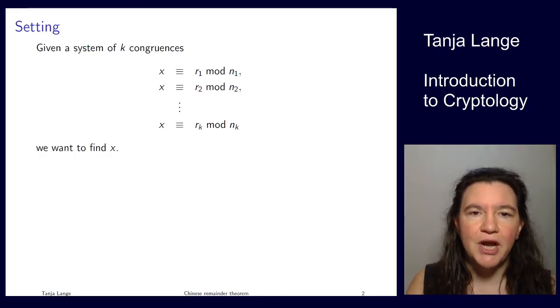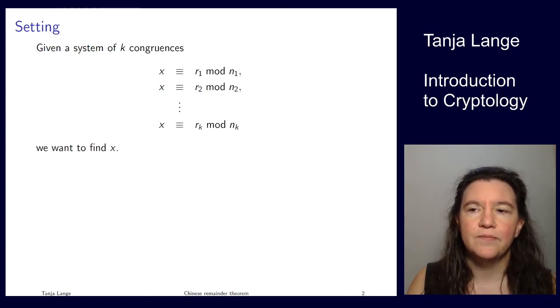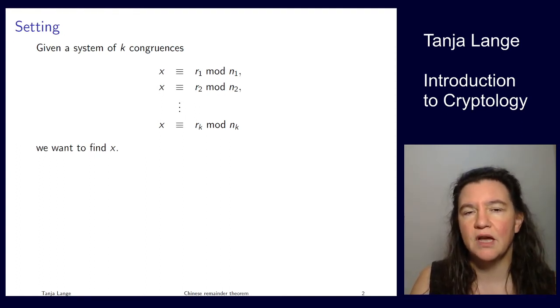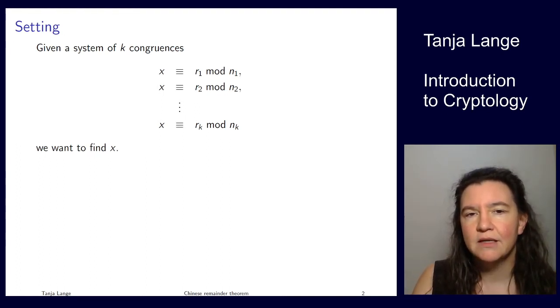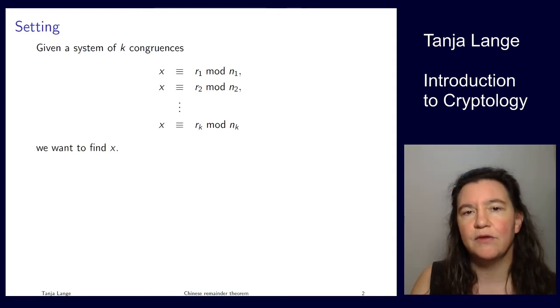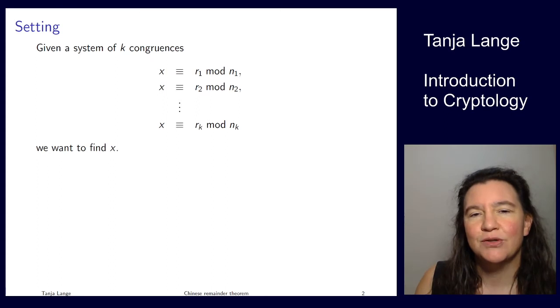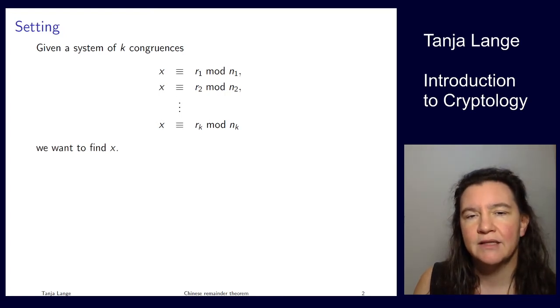This short video explains what the Chinese Remainder Theorem does. The Chinese Remainder Theorem deals with a system of congruences. Here's an example: we're looking for a solution x which satisfies x ≡ r₁ mod n₁, x ≡ r₂ mod n₂, and several more, at least two congruences, up to x ≡ rₖ mod nₖ. Given this system, we're asked to find such x.